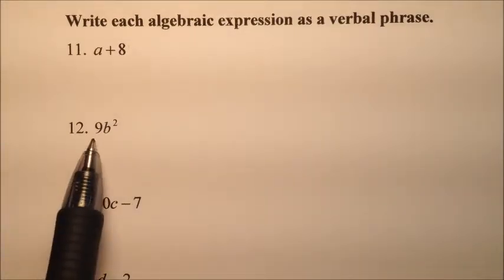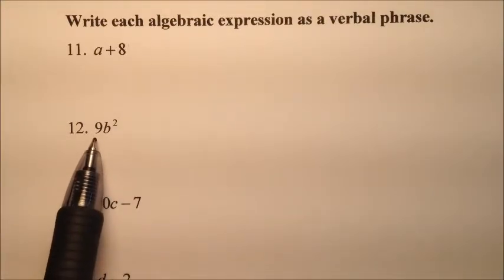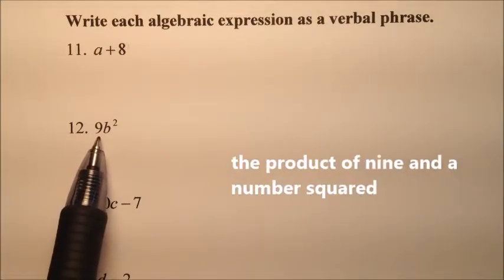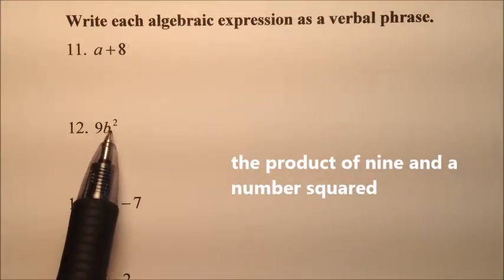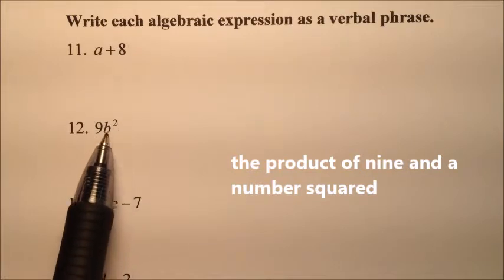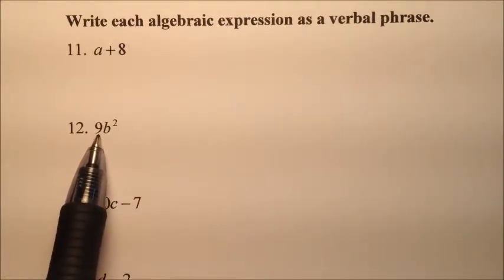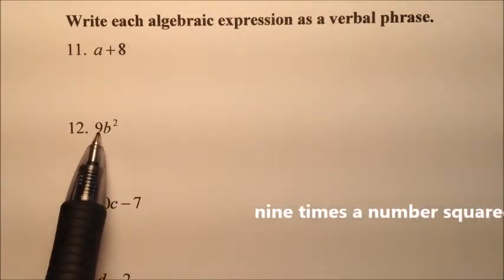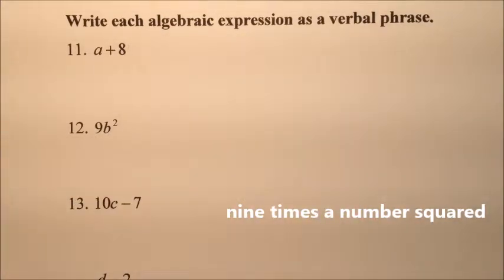Number 12 looks like we have 9b squared. So we could say something like 'the product of 9 and a number squared' — that would probably be the best one — or '9 times a number squared.' Something like that would be good.